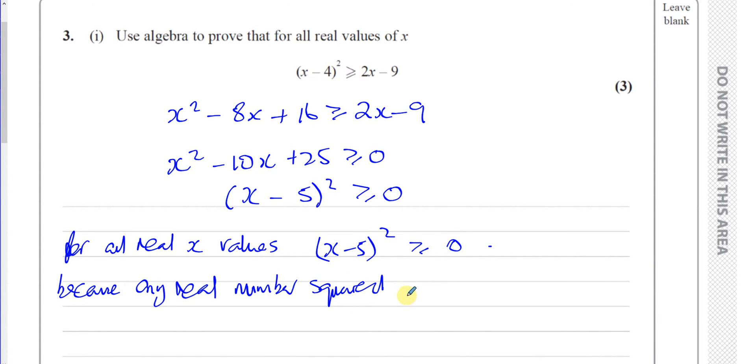Whether it's positive or negative, will be greater than or equal to 0. If the real number is 0 squared, it will give you 0. If it's any other number like minus 5 or minus 3 or minus 10 or minus a million, you square any negative number, you're going to get a positive number. So for all real x values, x minus 5 squared is going to be greater than or equal to 0.